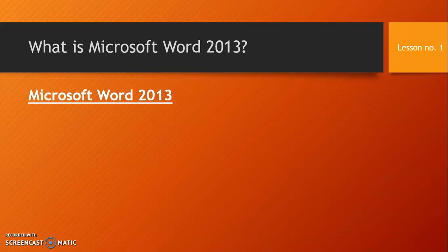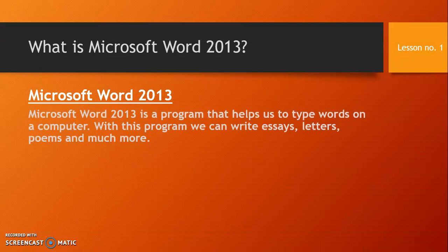What is Microsoft Word 2013? Microsoft Word 2013 is a program that helps us to type words on a computer. With this program we can type essays, letters, poems, and much more. It is just like a piece of paper on which you can write essays, make drawings, write letters, poems, do maths work, English work, rough work — everything you want to do. Same as the working of Microsoft Word 2013, which is a program that helps us to type words on a computer.